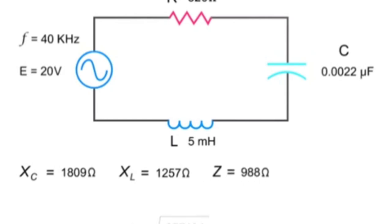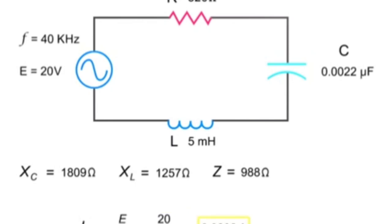To derive the total current of the circuit, divide the source voltage by impedance. Thus, 20 volts divided by 988 ohms equals 0.0202 amps, or 20.2 milliamps.